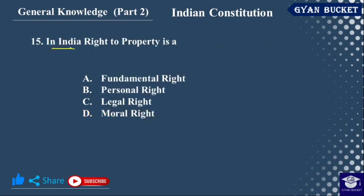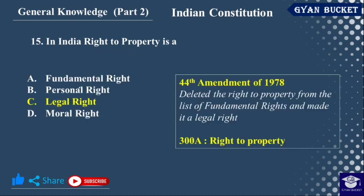In India, the right to property is a legal right — option C. The 44th Amendment of 1978 deleted the right to property from the list of fundamental rights and made it a legal right. The right to property is now under Article 300A.